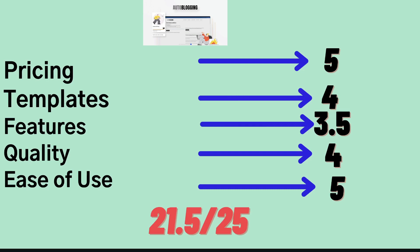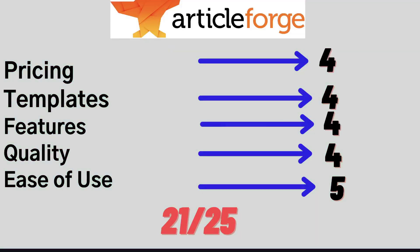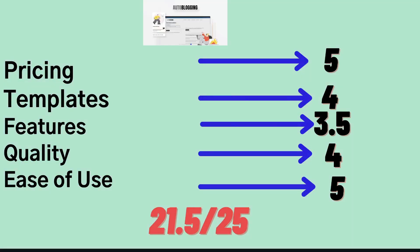Overall, I'd give Wordplay a score of 20 out of 25, Article Forge a score of 21 out of 25, and Autoblogging.ai a score of 21.5 out of 25. The reason Autoblogging.ai gets the edge is because the quality and quantity of content has really been impressive, and I really like that they have a free plan on AppSumo. If you want to try any of these tools, I'll leave a link in the description below. I hope you learned something new and found the best article generation tool for your business. If you enjoyed this video, give it a thumbs up and subscribe if you haven't already — until next time, stay well.